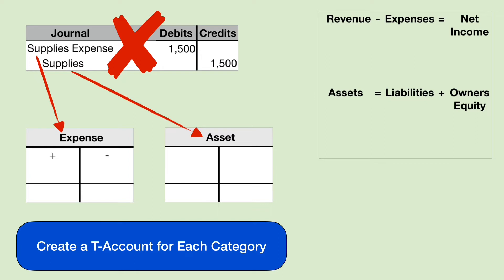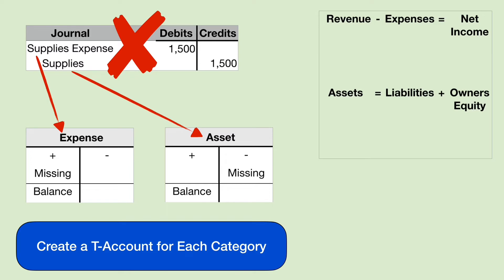Let's remember that expenses have a debit balance. The normal balance of expenses is debit. That means the plus sign is on the debit side and the balance of expense accounts is on the debit side. The normal balance of asset accounts is also debit — the balance of assets is on the debit side. We are missing a debit to the expenses — missing a debit. And in the case of the assets, we are missing a credit.